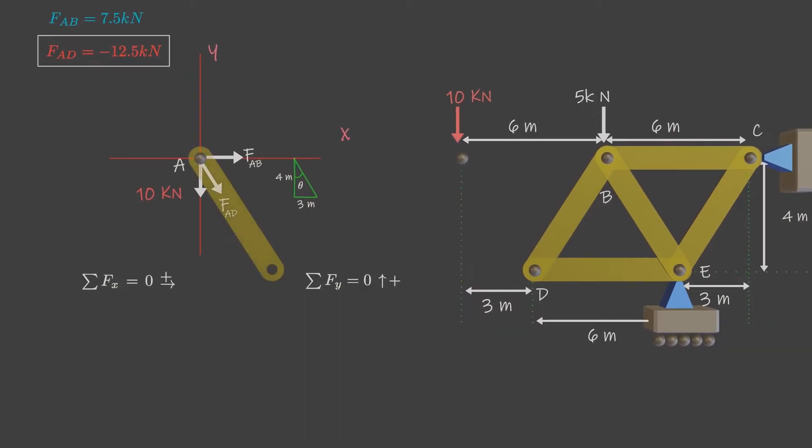Member AD is negative, so it is in compression, whereas member AB is in tension state.